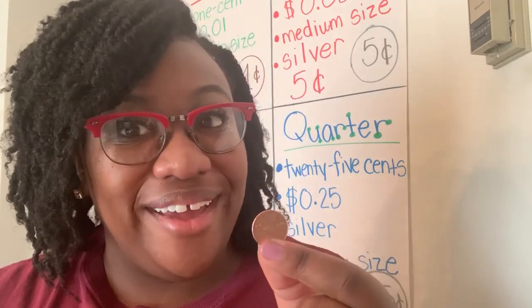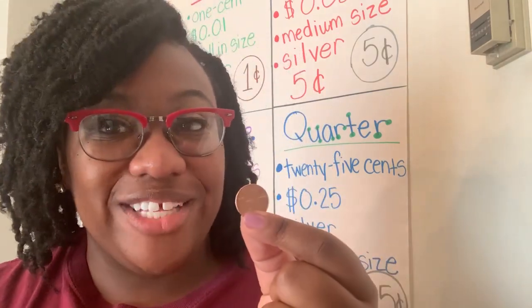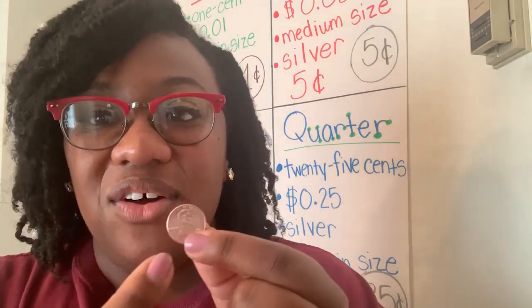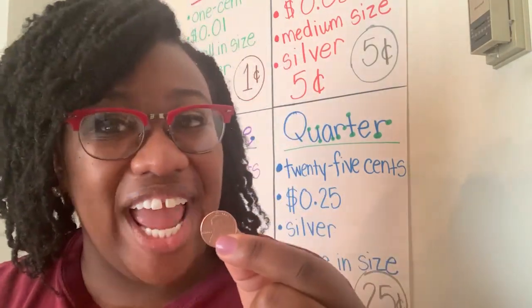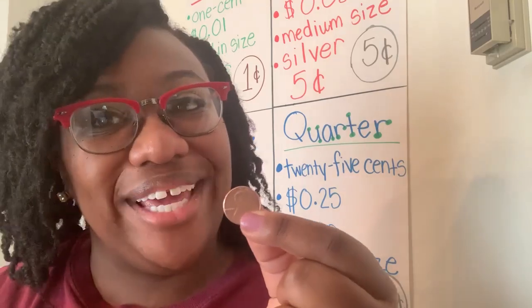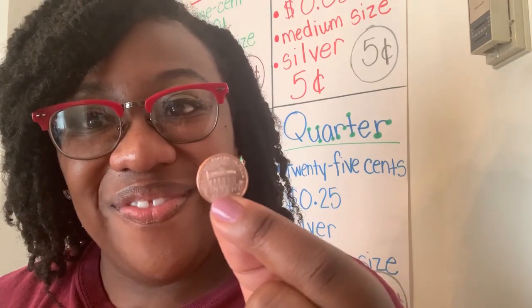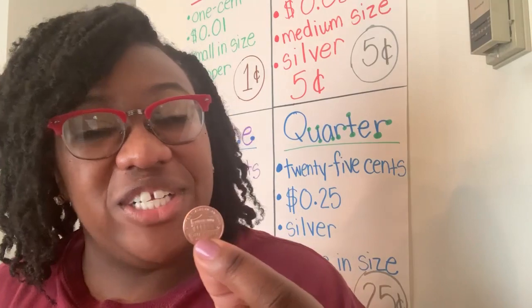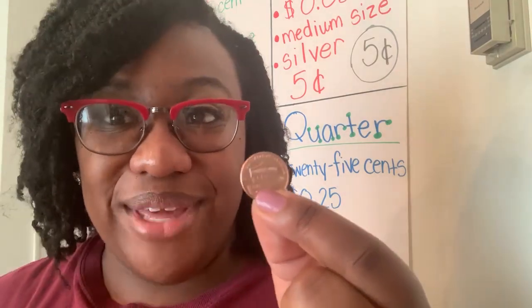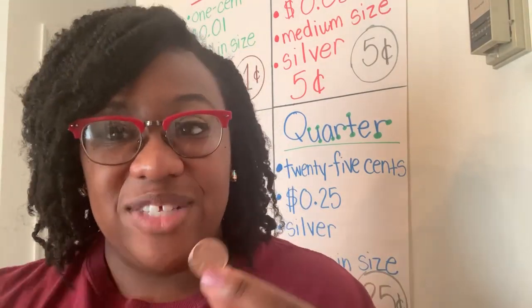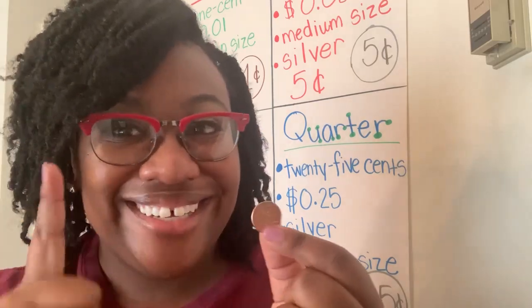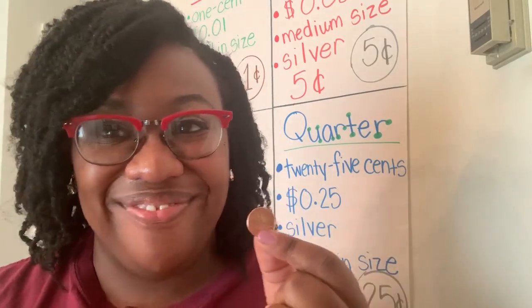Our penny is worth one cent. And on the head of our penny, we have President Abraham Lincoln. Then we flip our coin to the tail. Some of our pennies have the Lincoln Memorial on it, and some of them have this seal with 13 stripes that represent our federal government. But most importantly, our penny is worth one cent.